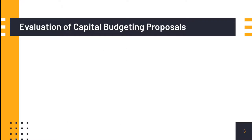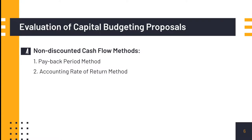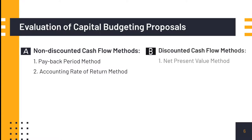One of the important steps in capital budgeting procedure is to evaluate the profitability of alternative projects and select the best one. Several methods are available to evaluate capital expenditure proposals. The most commonly used methods can be classified into two broad categories: 1. Traditional methods or non-discounted cash flow technique, and 2. Time-adjusted or discounted cash flow technique.